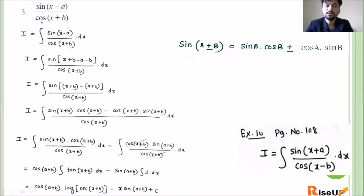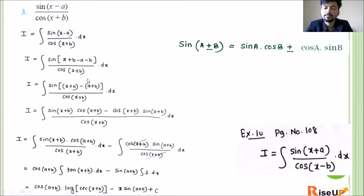Now let us look at the third question, similar to the second one: integrate sin(x minus a) upon cos(x plus b) with respect to x. In the denominator we have (x plus b), so we want (x plus b) in the numerator too. We rewrite sin(x minus a) as sin((x+b) minus (a+b)), so the numerator becomes sin((x+b) minus (a+b)) upon cos(x+b).